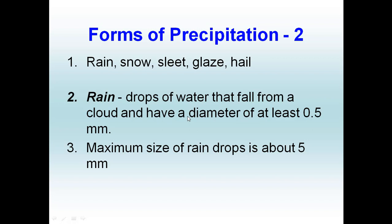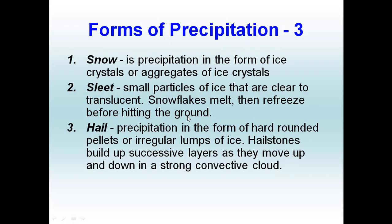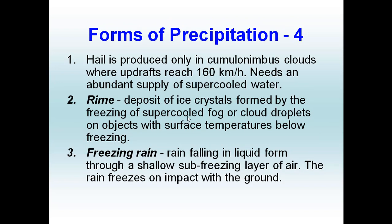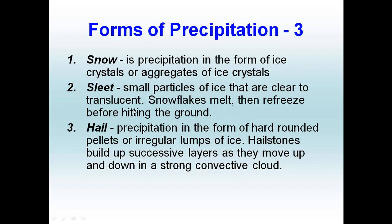We all know what rain is — liquid water that falls from the sky — and we also know what snow is, which is the same thing as rain except it falls as ice crystals or frozen water. But what would be the real difference between sleet, hail, and what is known as glaze, which is really just freezing rain?